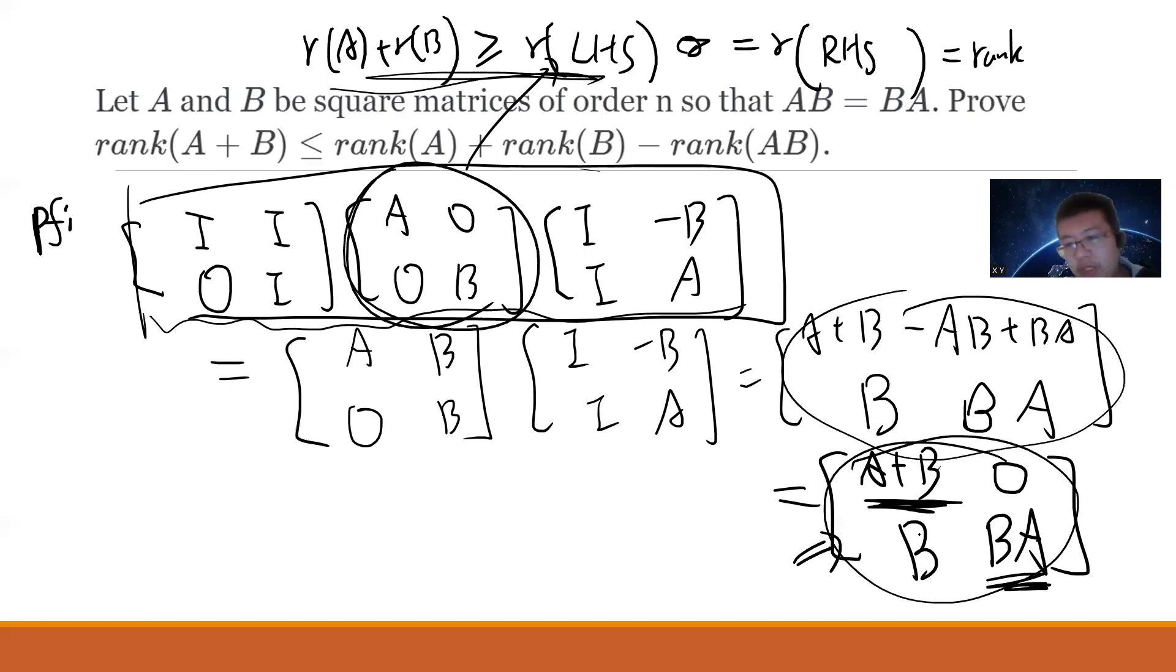right, rank, but there's maybe a case that B will cancel rank, so actually I should like virtually equal to rank A plus B, plus rank BA, so I have less or equal to rank A plus rank B minus rank AB okay so this proof